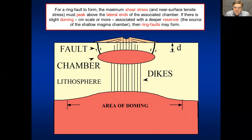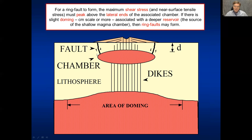For a ring fault to form, shear stresses — and at the surface, tensile stresses — have to concentrate above the margin of the chamber. Tens of numerical models with various magma chamber shapes suggest that the requirement is a large magma reservoir producing slight doming — perhaps only centimeters of uplift — to concentrate stresses above the lateral margins rather than at the top, which would instead produce dikes or inclined sheets.